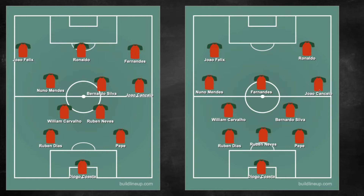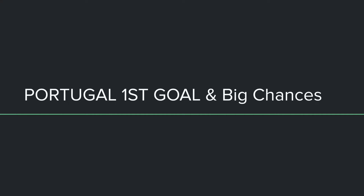The problem with the initial shape was that Uruguay countered with a back five in a very low mid-block, which was quite irritating. So Santos adapted: Neves started with Carvalho in the pivot, Felix stayed wide, Nuno Mendes inverted into midfield from left-back, Bernardo Silva pushed higher, Ronaldo stayed central, Fernandes stayed wide, and Cancelo hugged the touchline to provide crossing opportunities. This shape was more effective, as was evident in the second half, and led to Portugal's first goal.